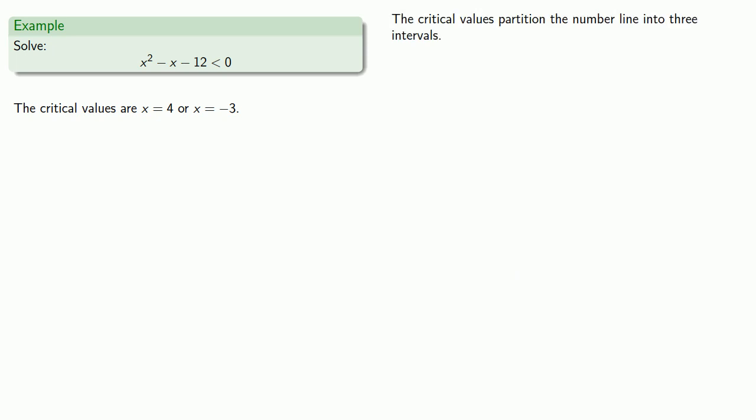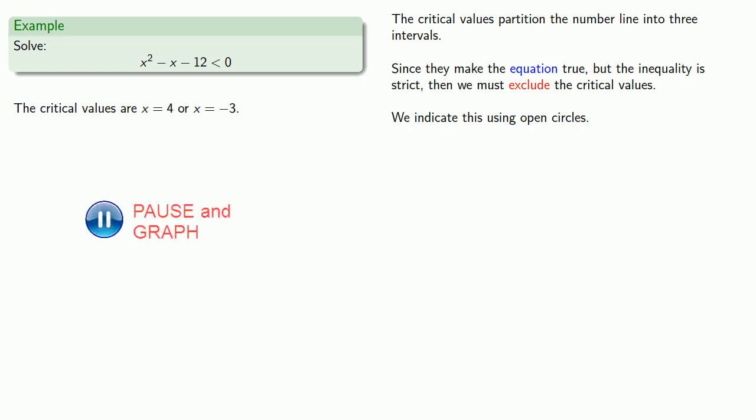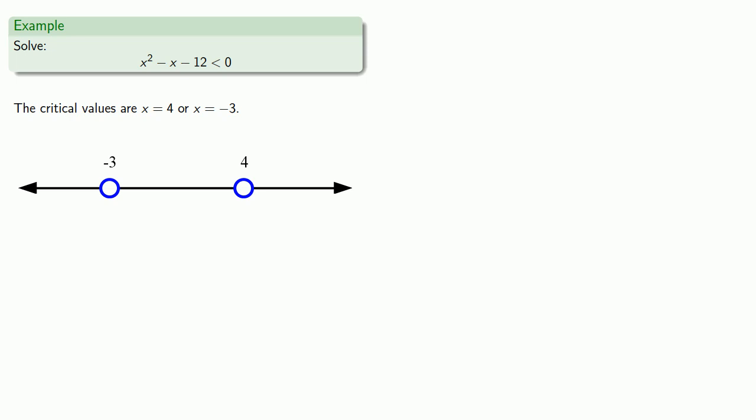So the critical values partition the number line into three intervals. Since they're the values that make the equation true, but the inequality is strict, then we must exclude the critical values. And we indicate this by graphing these critical values using open circles. So we have three intervals. We need to test a point in each interval.